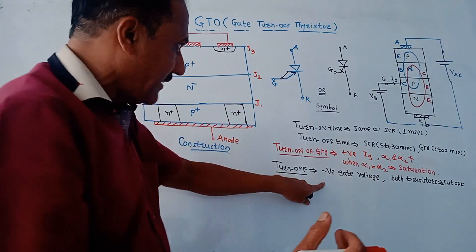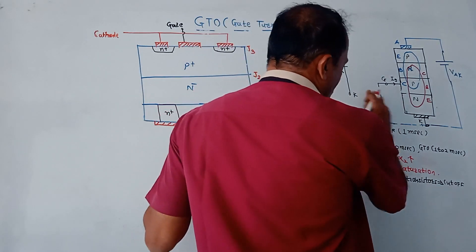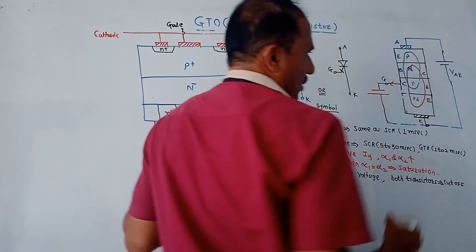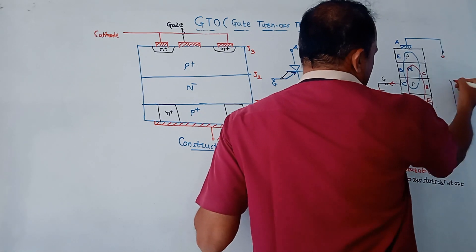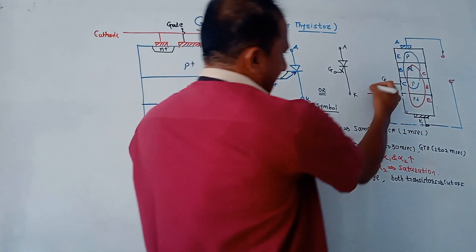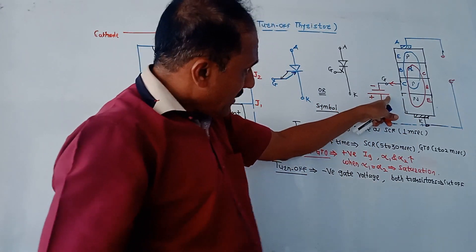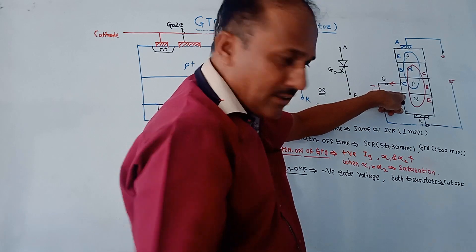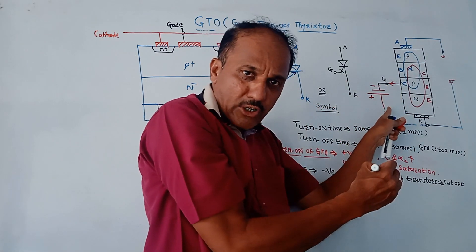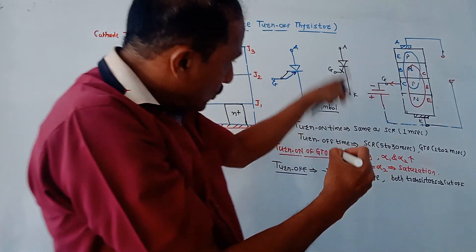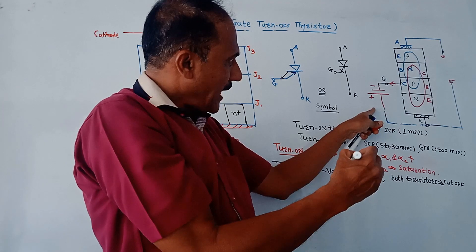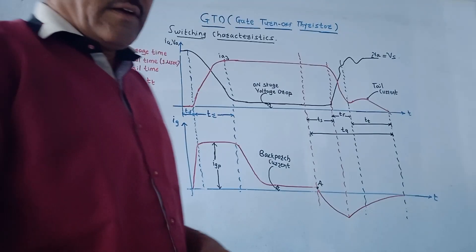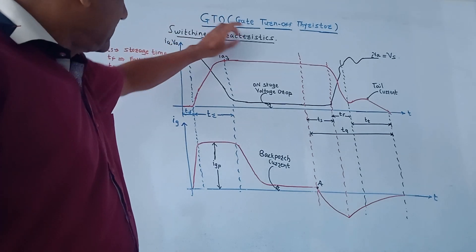The turn off mechanism is pretty simple compared to the SCR. To turn off the GTO, we need to apply a negative gate voltage. The direction of gate current will be reversed. Due to this negative gate voltage, the excess carriers from the base terminal of the NPN transistor and the collector terminal of the PNP transistor are taken out and applied to the external circuit. This causes both transistors to cut off, and the GTO turns off.